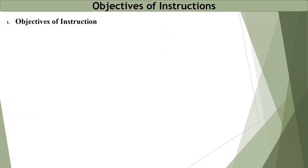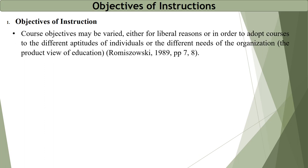Now there are some objectives of instruction. When we do something, we set objectives for what we are to do during a specific time. During instructions, there are some objectives — course objectives may vary, either by liberal reasons or in order to adapt courses to the different aptitudes of individuals or the different needs of organizations.